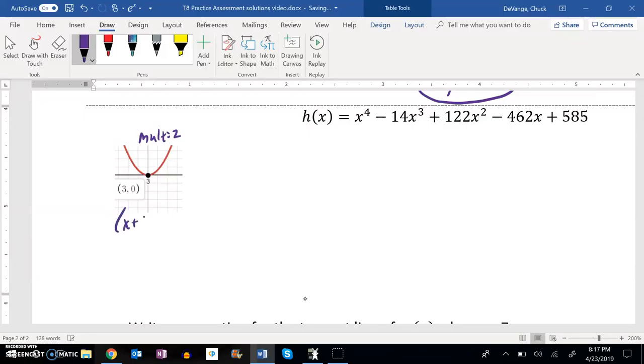So I know that this will have an x plus 3 and another—oh, I'm sorry, x minus 3—and another x minus 3 as factors of it. So let's divide them out and see what we can do.